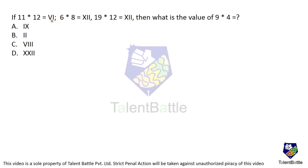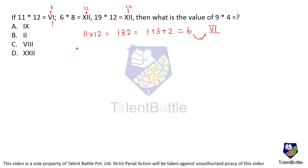If 11 into 12 equals Roman numeral VI, and 6 into 8 is 12, and 19 into 12 is 12, then what is the value of 9 into 4? Now, 11 into 12 comes out to be 132. If you add the digits: 1 plus 3 is 4, 4 plus 2 is 6. This 6 has been written in Roman numeral form. Let's check if this logic holds for the others. 6 into 8 is 48, and 4 plus 8 comes out to be 12. Keep it as 12.